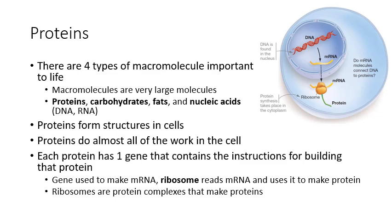The ribosome reads the mRNA and builds a protein based on those instructions, which were ultimately copied from the gene. The ribosome contains many proteins and also some RNA that does work inside it — making the ribosome one of the main examples where work is done by RNA, not just protein. The diagram summarizes this process: DNA in the nucleus is copied into mRNA, transported out by proteins, and read by the ribosome to build the protein.